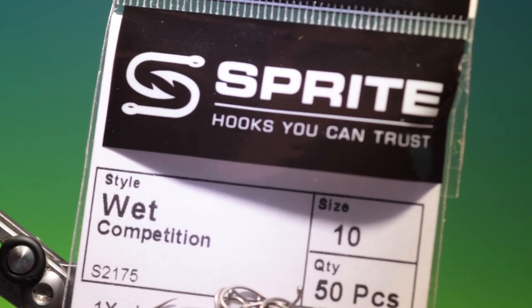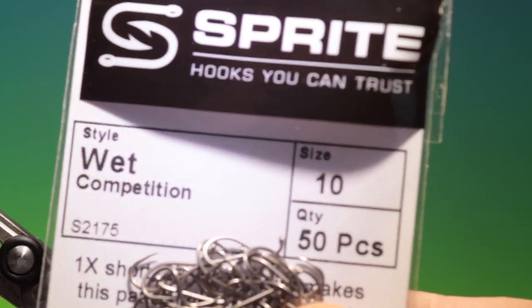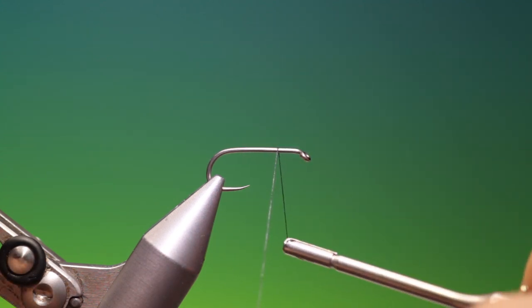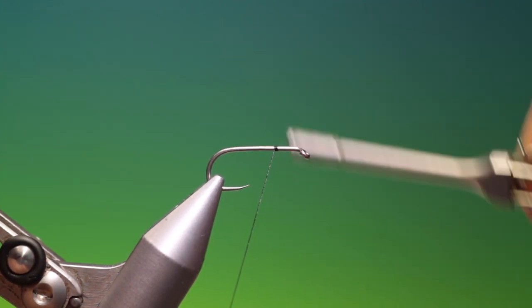Okay, we'll start with the Partridge Sprite, wet, size 10, barbless. I've got sheer black, 40 nought.